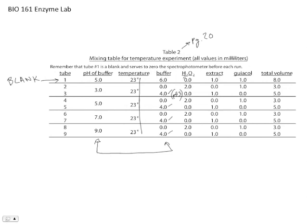Notice what's happening in here is that there is no hydrogen peroxide. You're leaving out one of the reactants, and so even though you have the guaiacol and you have the enzyme, you're not going to get any reaction taking place because one of the reactants is missing. This is going to serve as your blank for all of the experiments that you'll do.